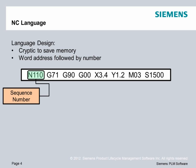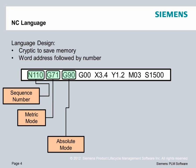We start off with a sequence number, which is nothing more than a line number or an identifier, so that if someone wants to search in the program for that line, he can do that. Next up is the G-code group for inch/metric mode. In this case, it's G71 for metric mode. You can generally have multiple G-codes on the same line as long as they're not part of the same group. The second G-code is from the absolute mode group, which means I'm either going to be running absolute or incremental mode.